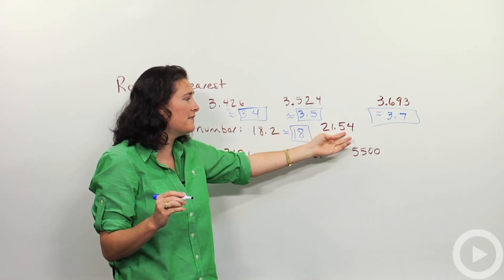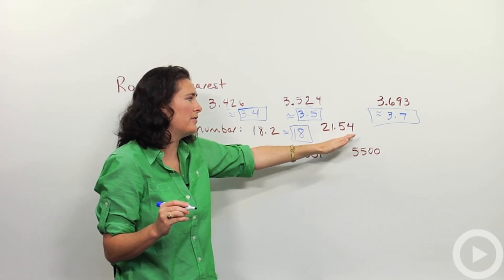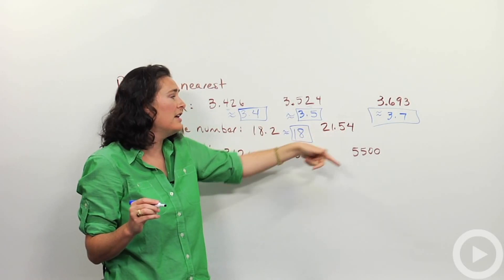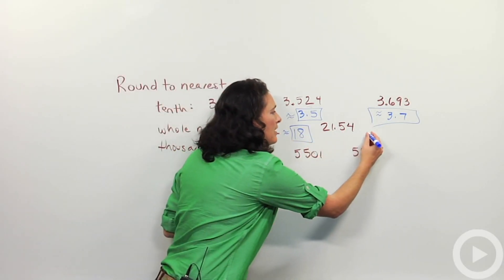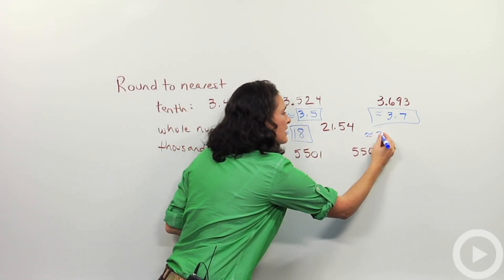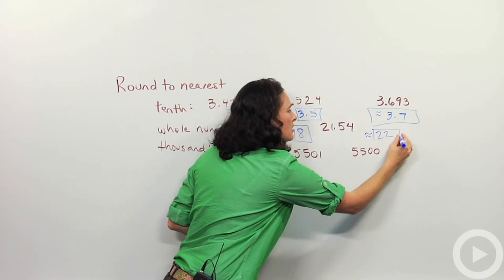Or 21.54. I don't care about the five four part. What I care about is the five. That five tells me to round up. This is going to be approximately 22. Whole number.